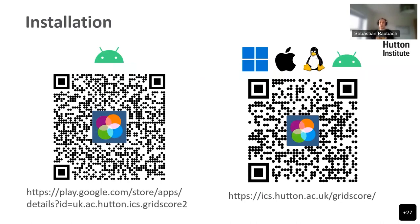Here's some information about how you can install it. Please note that for this training, you do not have to use GridScore — it's all a demonstration, but feel free to install the app later on. We will be sending these slides around. On Android, there's a dedicated app in the Google Play Store. For all other devices — Windows PCs, laptops, Macs, iPhones, iPads, Linux, and even Android itself — you can follow the link on the right-hand side which takes you to the website.